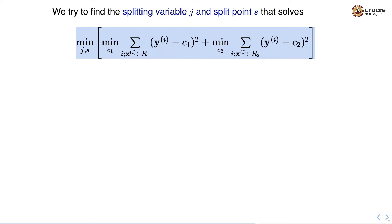We try to find the splitting variable j and split point s that solves the following equation. We want to minimize over j and s, we want to minimize over c1 in region R1 and we have to minimize over c2 in region R2.